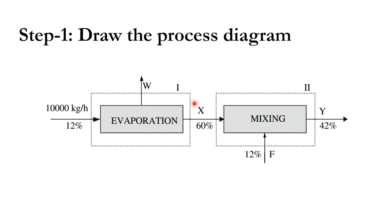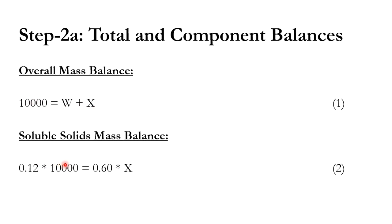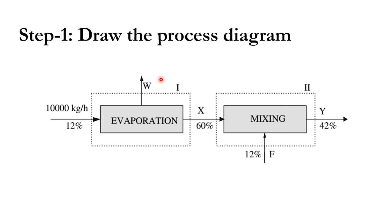For envelope one, the overall mass balance gives: 10,000 = W + X. The component balance (since W contains no soluble solids) gives: 0.12 × 10,000 = 0.6 × X. Solving: X = 2,000 kg/hr and W = 8,000 kg/hr. This means 80% of the feed is evaporated and 20% — the 60% concentrated stream — proceeds to the next system.